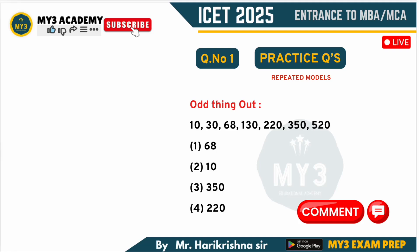In the last video I gave practice questions on odd man out, so now let's look at the solutions for those practice questions. If you observe this question: 10, 30, 68, and 130, 220 — they have given a sequence and we need to find out what is the wrong term in the sequence.